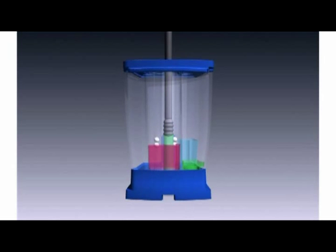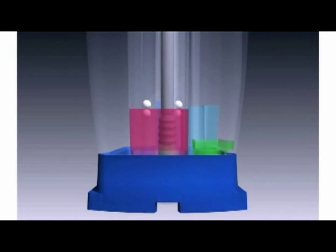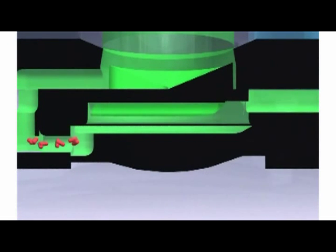The valve body rotates to position two and dispenses the sample through the active area. Here we see the organisms being trapped on the filter, while the remaining fluid is dispensed into a waste chamber.